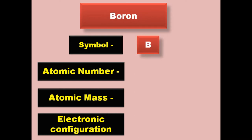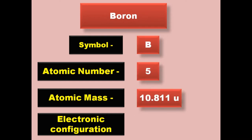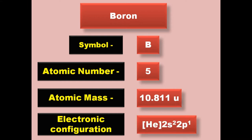Boron has symbol B, atomic number 5, atomic mass 10.811, electronic configuration [He] 2s2. Boron exists in solid form at room temperature.